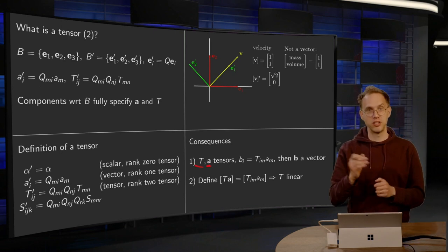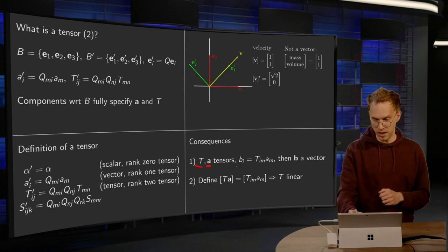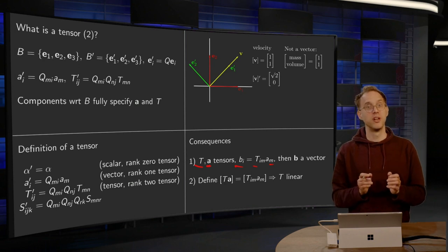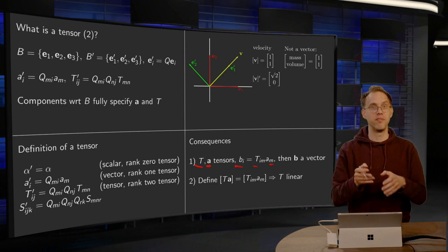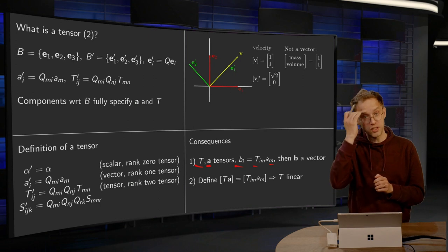T a rank 2 tensor, a a rank 1 tensor, then we can compute bi equals Tim am. We can define that because we know that once we specify Tim and am, we fully specify our tensor rank 2 tensor and our rank 1 tensor.